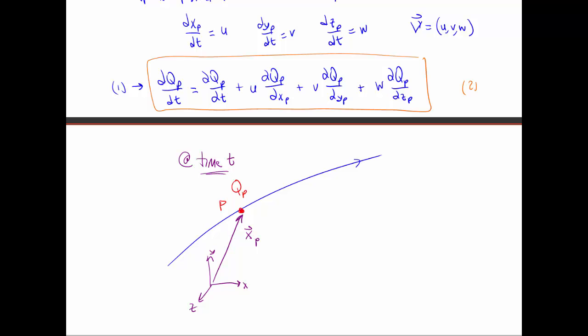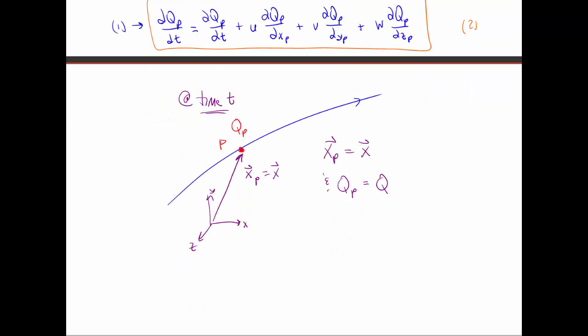So in terms of the Eulerian frame of reference, xp vector is equal to x vector, where xp is the position vector of the particle in the Lagrangian frame. x is just our Eulerian description, our field variable x is just the position vector. And whatever particle property q that this particle has is the same as the property q in the Eulerian reference frame. So whatever frame of reference we consider, we consider either Lagrangian on the left side or Eulerian on the right side, we're talking about the same variables.